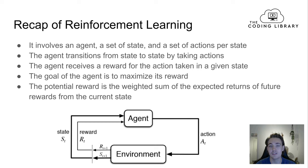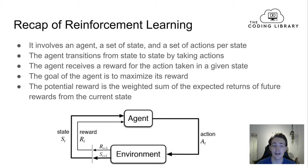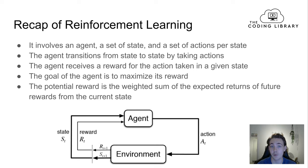The goal of the agent is to maximize its reward by taking actions in any given state to reach its goal in an optimal way. The potential reward is the weighted sum of the expected returns of future rewards from the current state. This is what we're going to do in Q-learning — calculate that weighted sum and apply it to find an optimal policy.